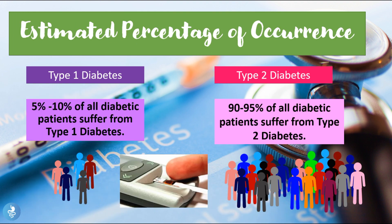Regarding estimated percentage of occurrence: only 5 to 10 percent of all diabetic patients suffer from type 1 diabetes, meaning only 5 to 10 percent suffer an absolute insulin deficiency. The remaining 90 to 95 percent of all diabetic patients suffer from type 2 diabetes, meaning they suffer a relative insulin deficiency.